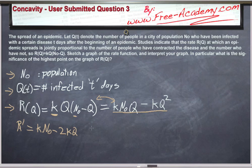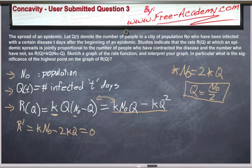We need to find where this is equal to zero and that should be pretty clear. Let's do the mathematics here. We have k n0 equals 2kq. The k's will cancel and q equals n0 divided by 2. So that's going to be our critical point.